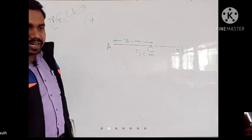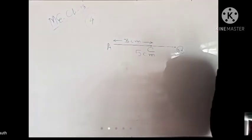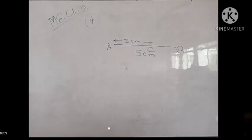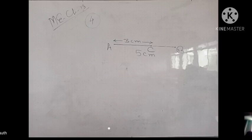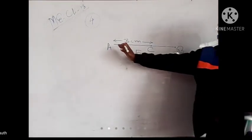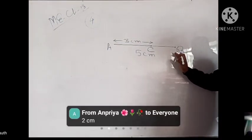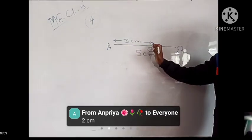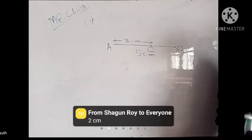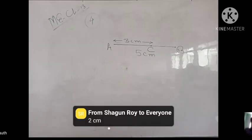Koi bata sakte ho, CB ka length kitna hoga? Question number 4 also, let us discuss question number 4 first. Iske baad 6 mein bhi aayenge. Toh 4 mein koi bata sakte hain hume ki CB ka length kitna hoga? Agar AC 3 cm hai aur AB total agar 5 cm hai. Message mein batayein sab koi. Either you can use a scale to measure or you can just tell me directly also.